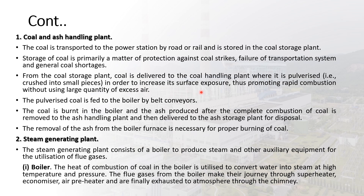The coal is pulverized to increase its surface exposure, promoting rapid combustion without using large quantities of excess air. The pulverized coal is fed to the boiler by belt conveyors. The coal is burned in the boiler and the ash produced after complete combustion is removed to the ash handling plant and then delivered to the ash storage plant for disposal.